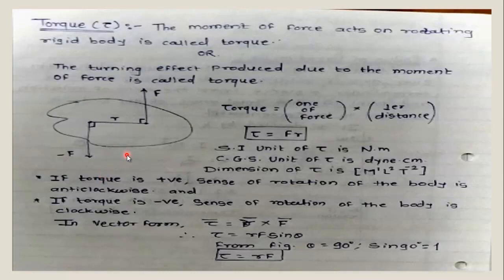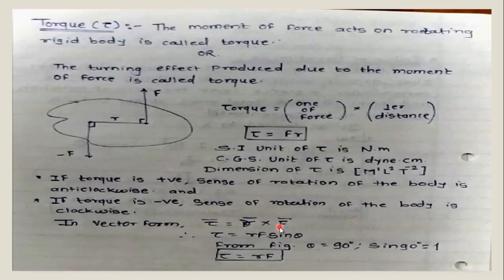If the torque is positive, the sense of rotation of the body is anticlockwise. If the torque is negative, the sense of rotation of the body is clockwise. If the moment of force moves the body clockwise, the torque is considered negative. The formula is torque equal to F into R. In vector form, vector torque T is equal to vector R cross vector F.